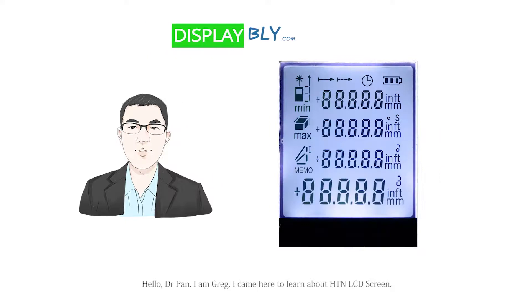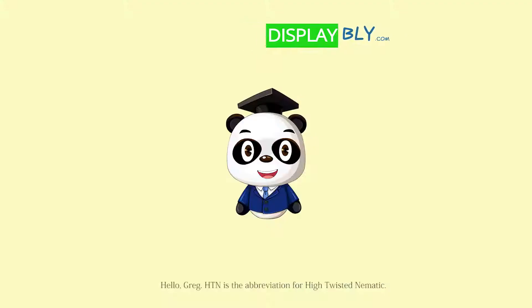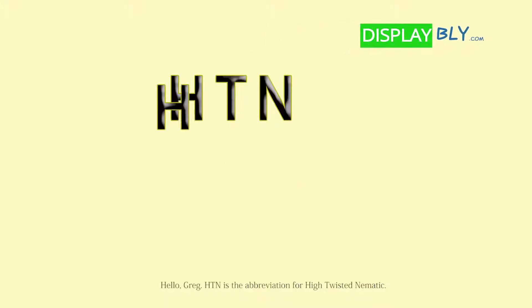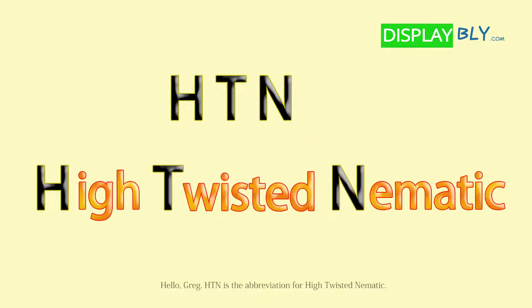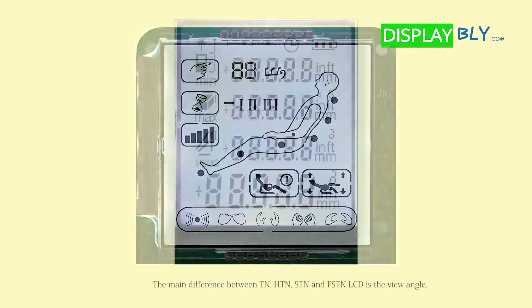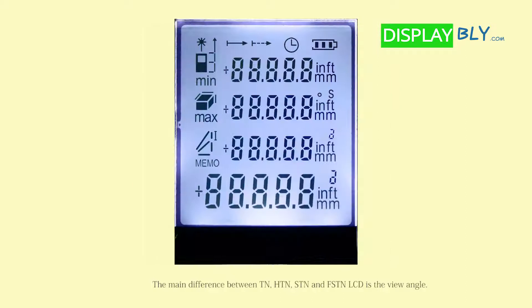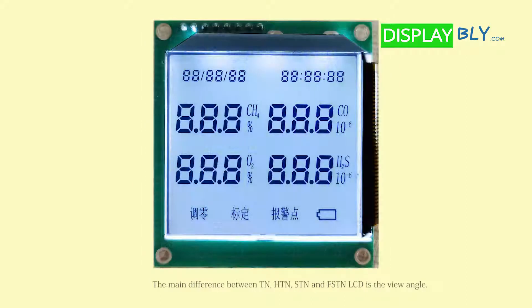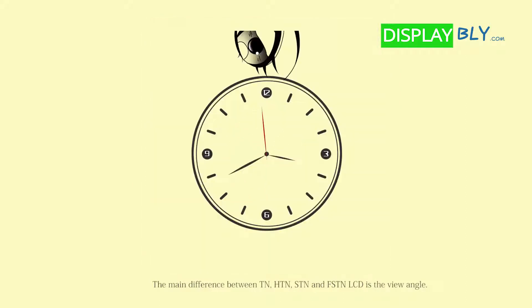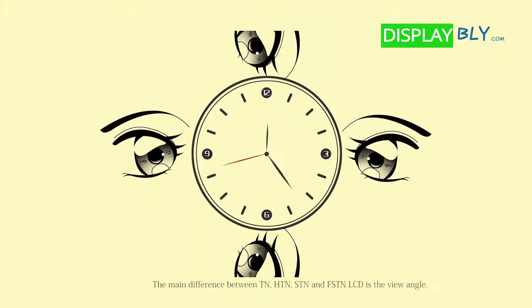I came here to learn about HTN LCD screens. Hello Greg. HTN is the abbreviation for High Twisted Nematic. The main difference between TN, HTN, STN, and FSTN LCD is the view angle.